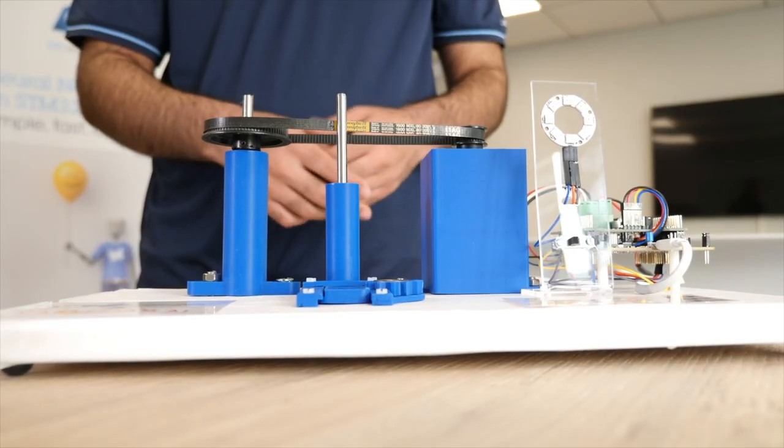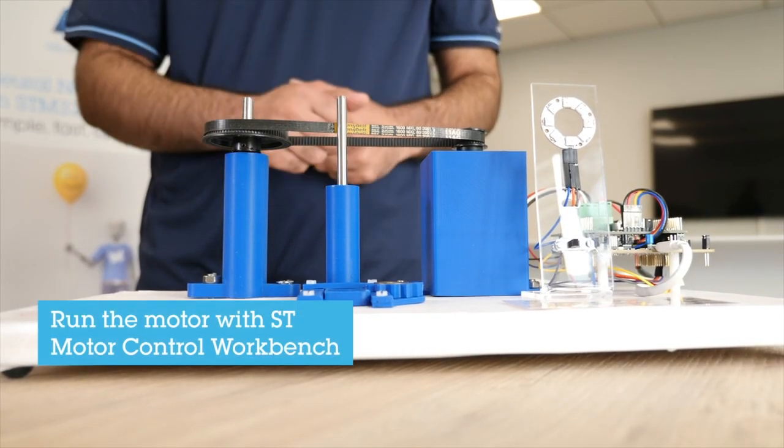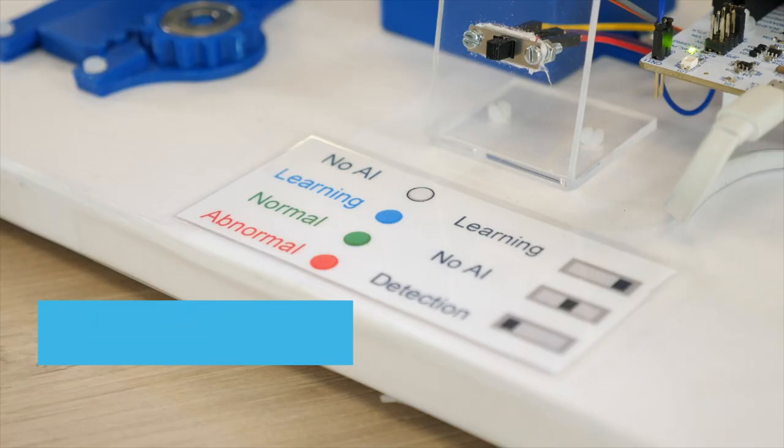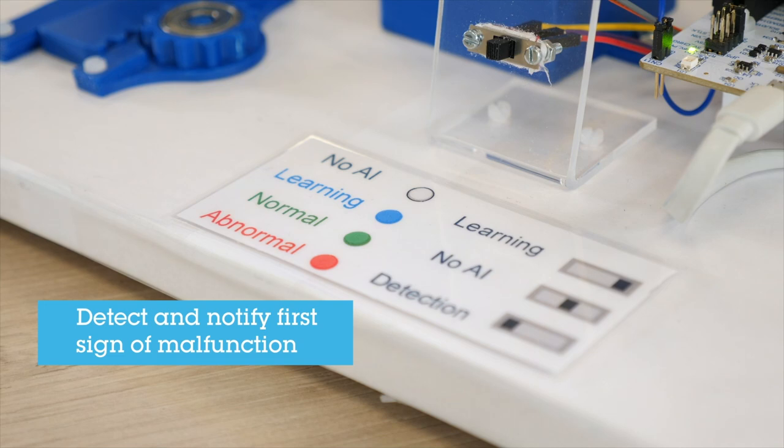In this demonstration we will show you four steps which will include to run the motor, to learn the normal behavior, to detect the anomaly and then raise an alarm to tell the user that there is an anomaly in the motor.